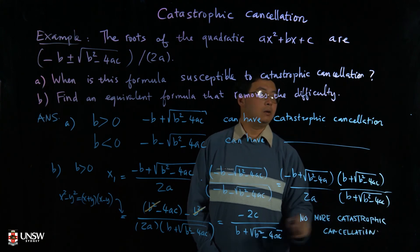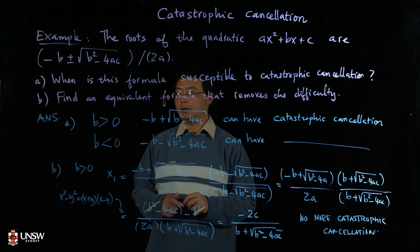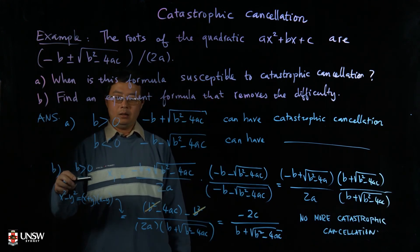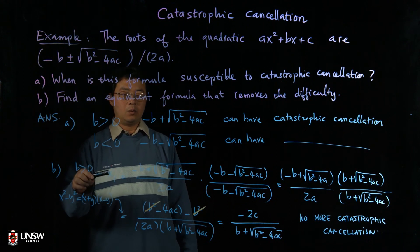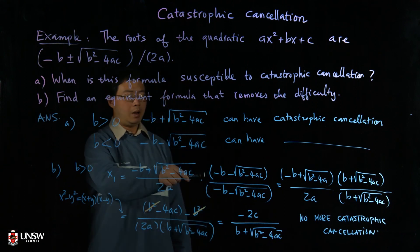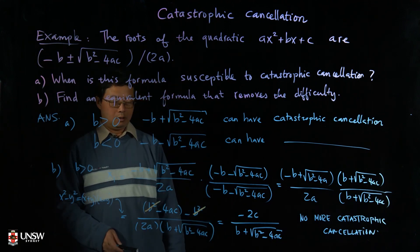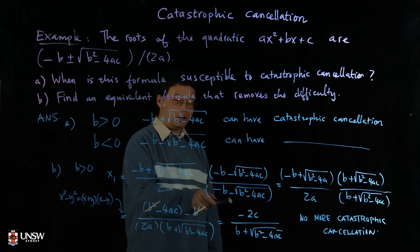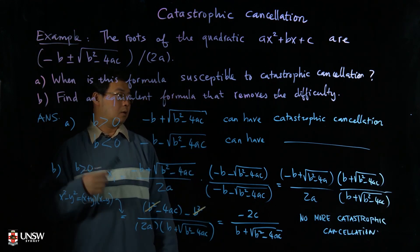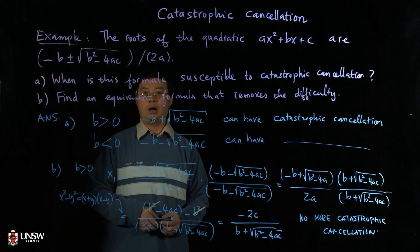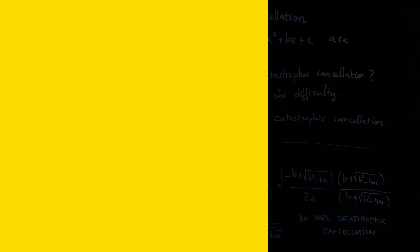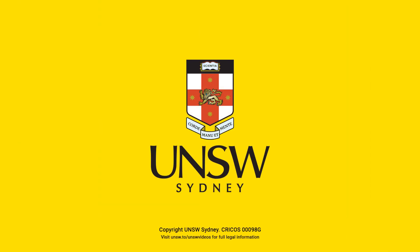You can do the same for the case b ≤ 0. When b is negative, the second root could have catastrophic cancellation. You can use the same trick — multiply and divide by the conjugate — to get an equivalent expression for the other root so that there is no catastrophic cancellation.